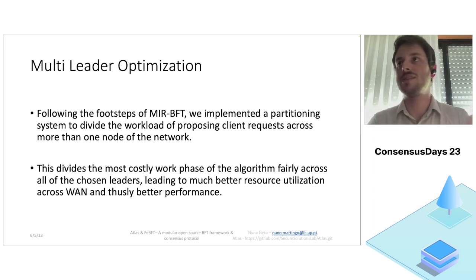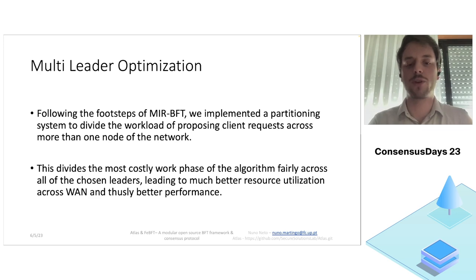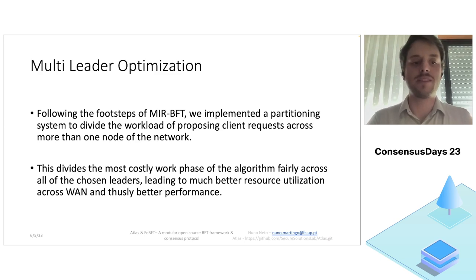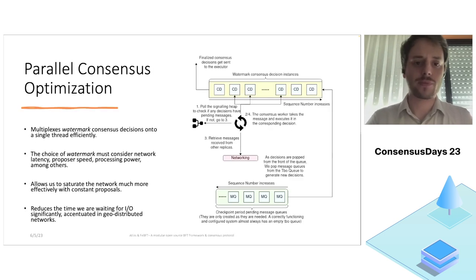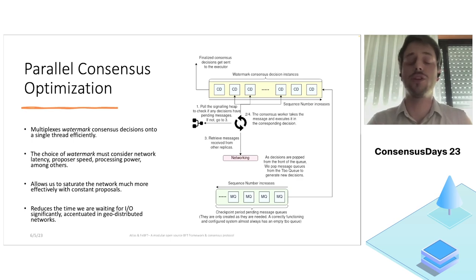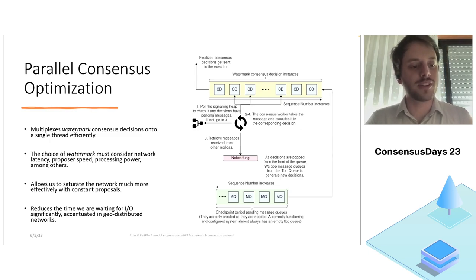One of the optimizations was based on MirBFT, which partitions the workload of proposing requests and sending them to all replicas in the system. This is the most resource-heavy task since it requires both networking and CPU — both to sign the massive proposed request and to actually send it to all replicas. Being able to partition this work across the entire quorum makes it much fairer and leads to better resource utilization and much better performance.